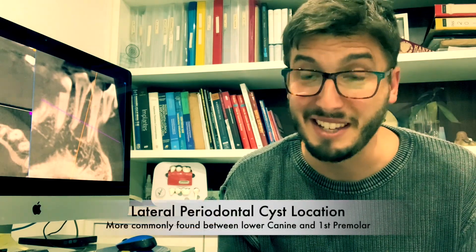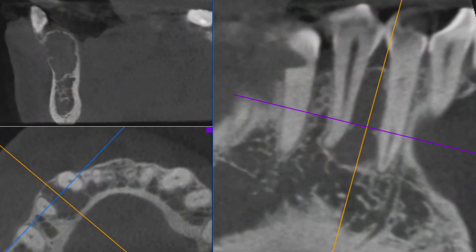This is very important for us to differentiate from other lesions. Also the cyst is much more common between the canine and the first premolar of the mandible. This is very common just like this case so we need to pay attention to that as well.